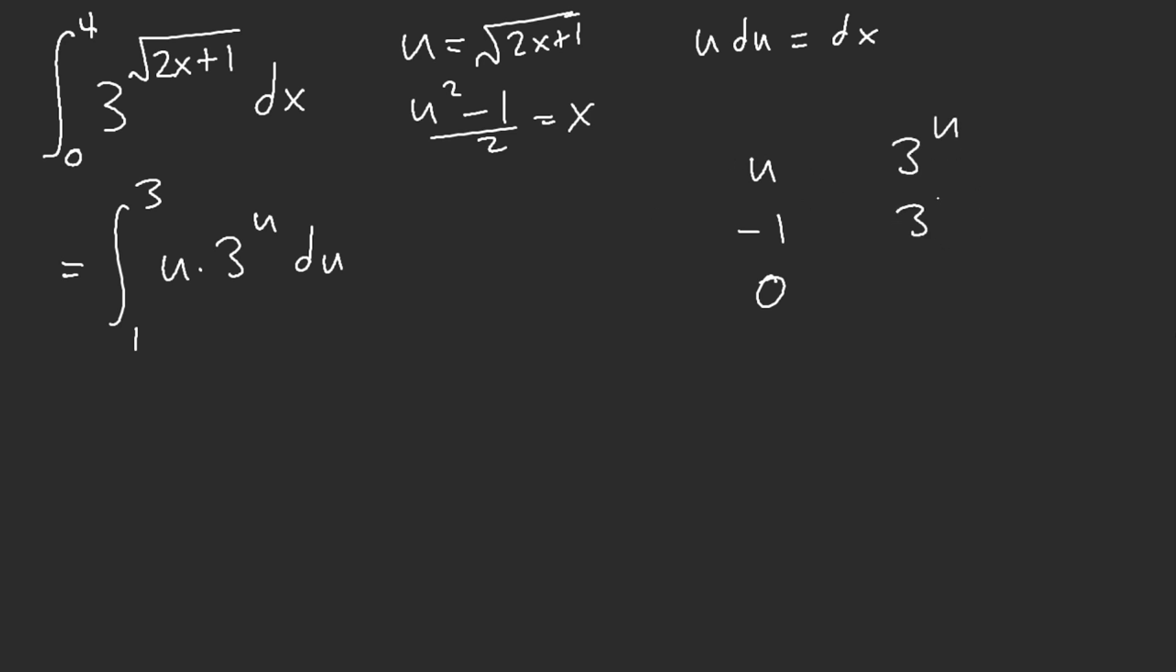3 to the power of u. 3 to the power of u divided by ln of 3. And then same here. ln of 3 squared. Okay? Usually what you would do is instead of rewriting all that, just draw an arrow like this. And then go 1 over ln of 3, 1 over ln squared of 3.